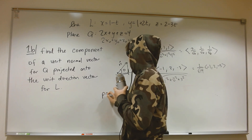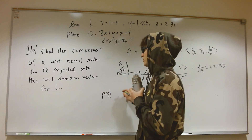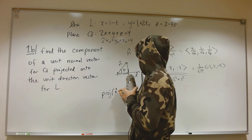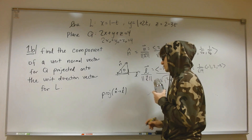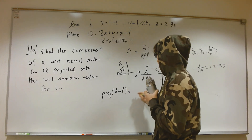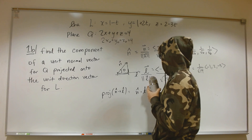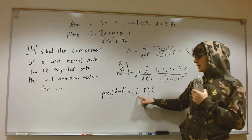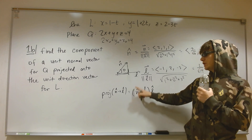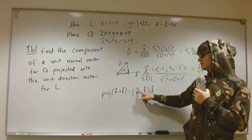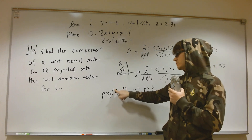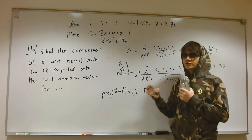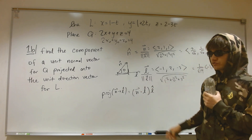The projection of n̂ onto L̂ is given by (n̂ · L̂) times L̂. In fact, for the scalar component alone, we just need n̂ · L̂, and this works as long as L has unit magnitude, consistent with the geometric formula.